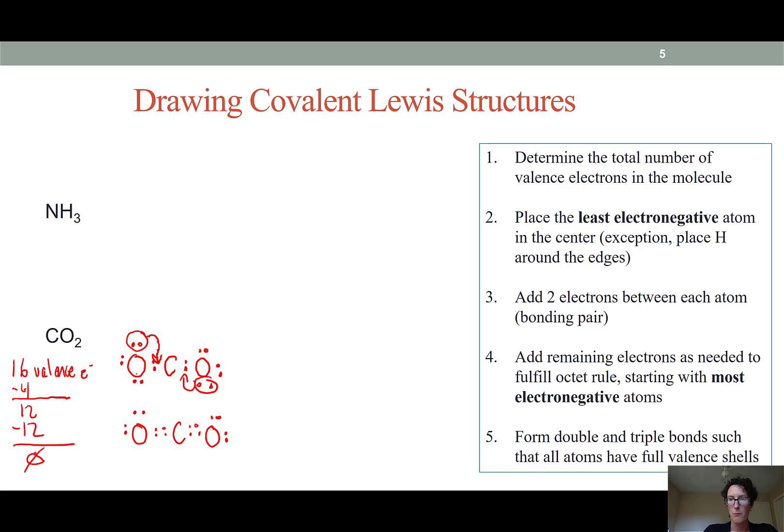Replacing our bonding electrons with lines we end up with what we usually see as a carbon dioxide molecule. This linear structure with the double bond oxygen on either side and two lone pairs on each of the oxygen atoms.